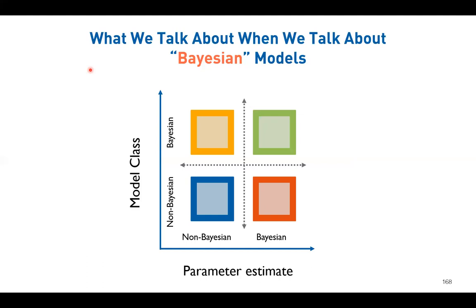There was a question about a review paper and how they combine frequentist and Bayesian methods - for example, doing a frequentist ANOVA and then a Bayesian t-test in the same paper. Does this make sense?